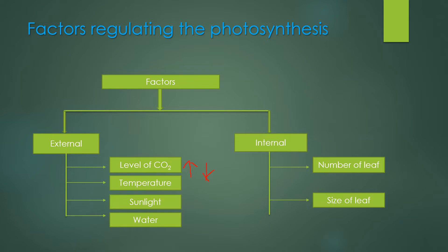The next factor is temperature. The optimum temperature for photosynthesis is 20 to 35 degrees centigrade. At this temperature, photosynthesis occurs at its maximum rate.